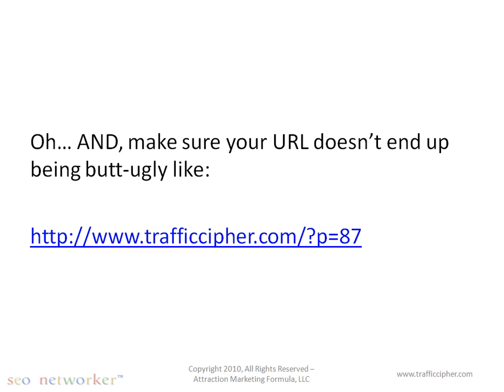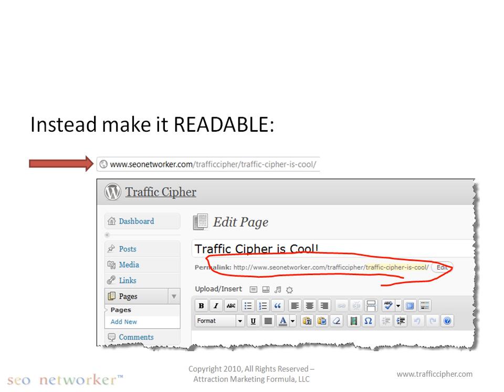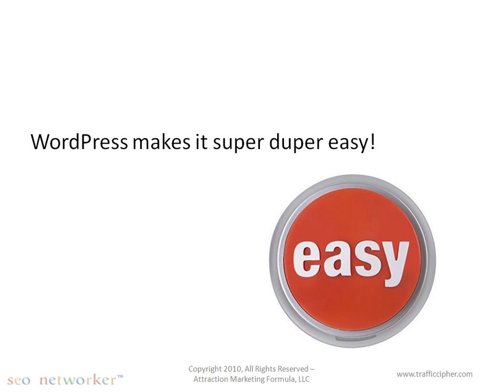A little bonus tip: make sure your URL doesn't end up looking really ugly, like trafficcypher.com/questionmypgoes87. That's not readable by users or search engines. When search engines look at that URL, all they know is it's trafficcypher.com, but they don't know what else you're trying to rank for with that page or post. Instead, make it readable. For example, put it as seonetwork.com/trafficcypher/traffic-cypher-is-cool — now it gives even more additional data to search engines so they have a better idea of what you're trying to rank for. That's a simple change inside WordPress, just like adding titles to a page or post. WordPress makes it super simple.